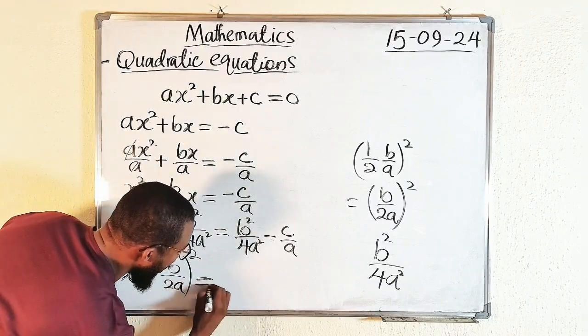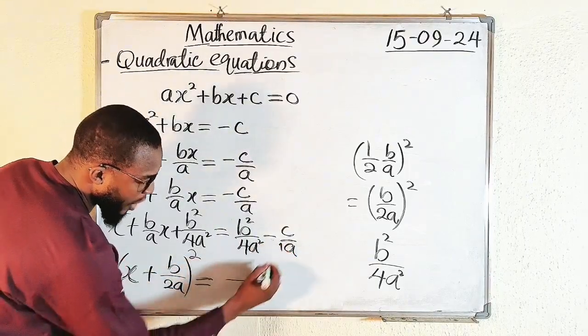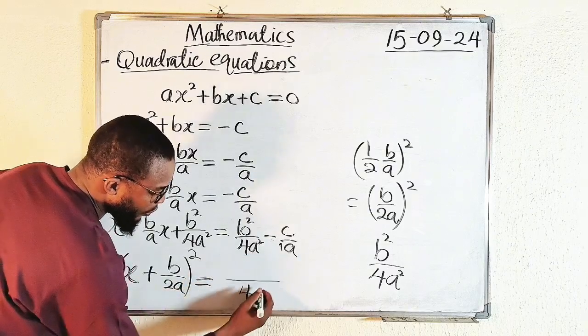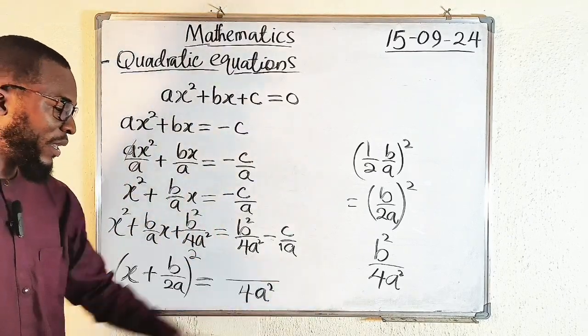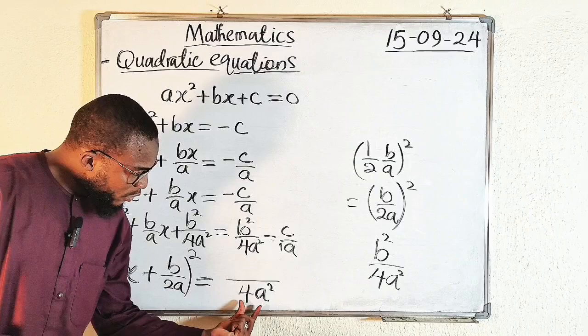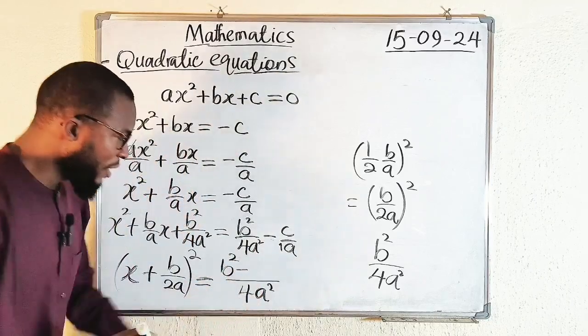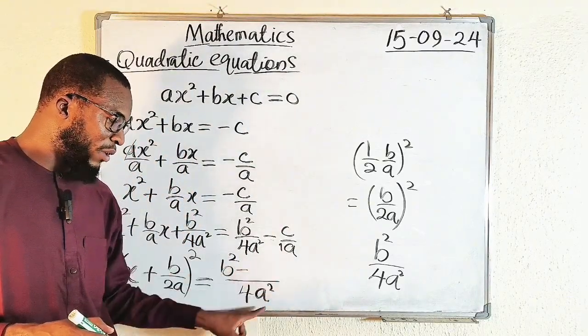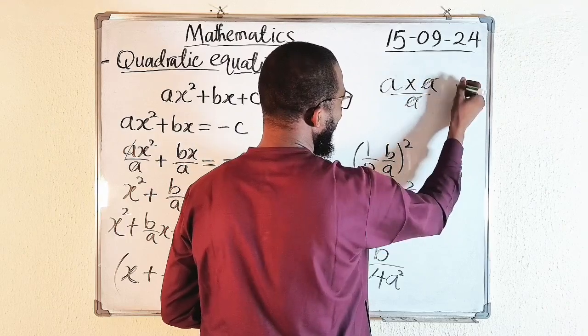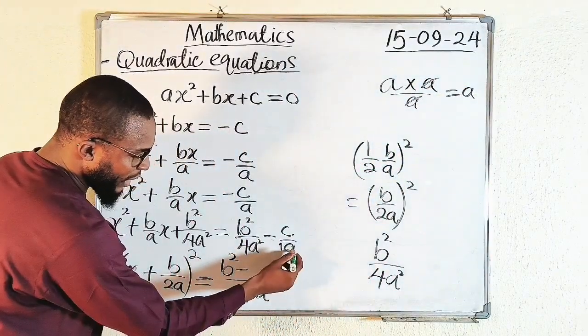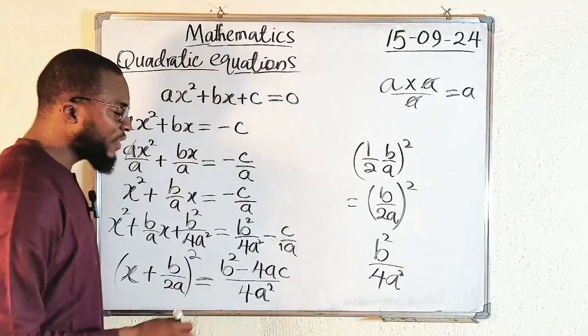This is equal to—now we have fractions here. Let me take the LCM. The LCM of 4 and 1 is 4, and a² and a is a². So if you take 4a² and plug it here, it goes exactly one time, and 1 times b² is b². Then this minus—if you plug 1 into 4 we have 4, a into a² we have only a single a. So the whole of a into 4a² will give us 4a times c, which is 4ac. We have (b² - 4ac)/4a².